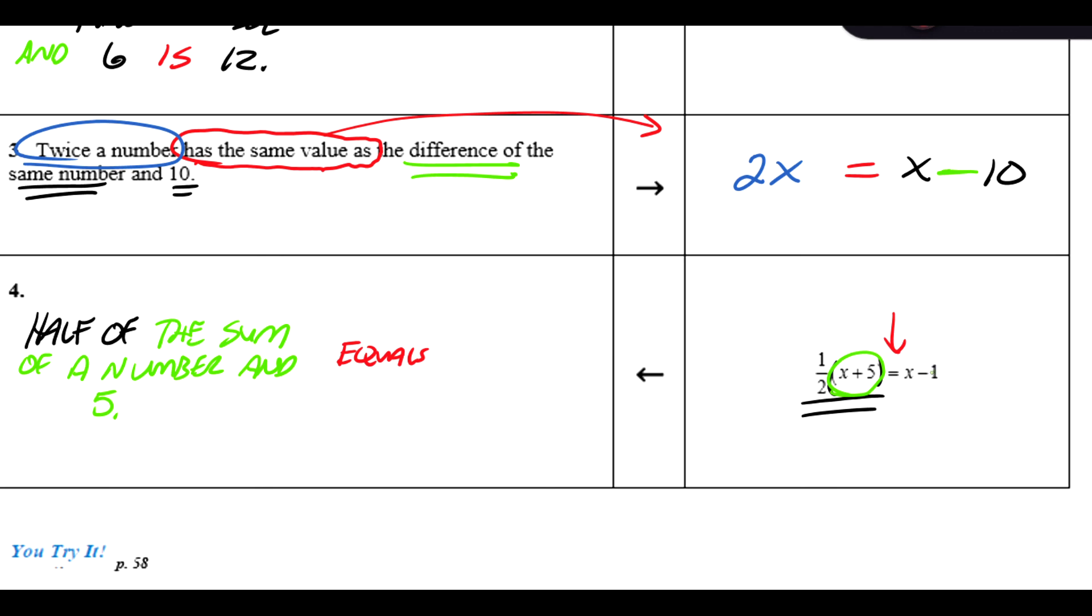Equals, and then the right side is the difference of, or we could say it's one less than the same number, because it's using x again. So half of the sum of a number and 5 equals one less than the same number. And that would be a translation back to English for that expression.